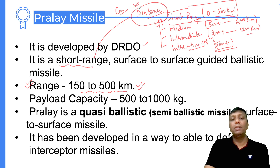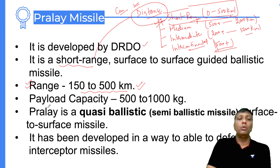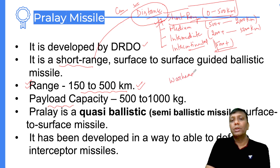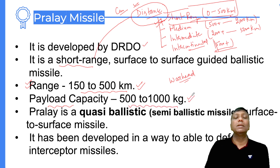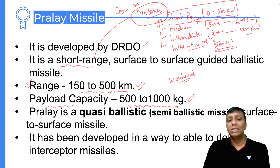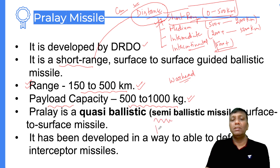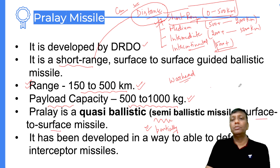The Pralay missile's range is short range — 150 to 500 km — and that is a static parameter. In terms of payload, the missile carries warheads. The warhead capacity is 500 to 1000 kilograms. It is a quasi-ballistic missile — not exactly completely ballistic, but partially ballistic in nature. It is a surface-to-surface missile.